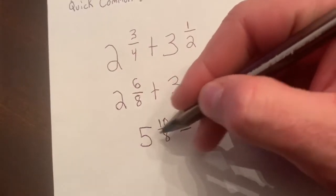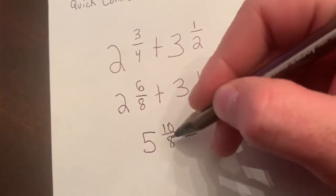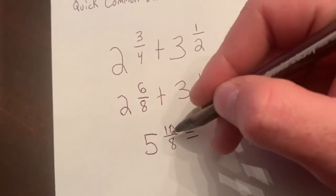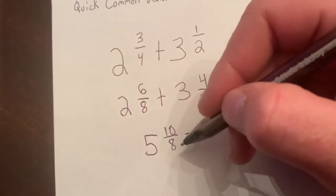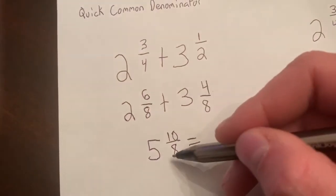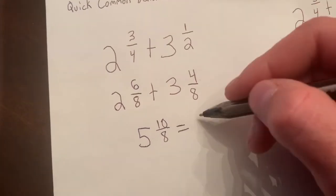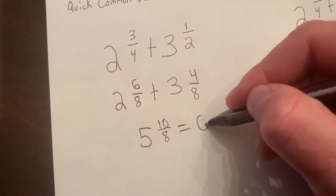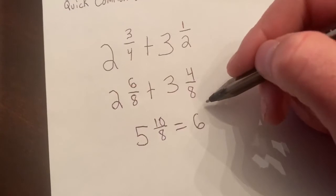Now this is not simplified. I've got to get this to be a regular fraction, not an improper fraction. So I can trade in one group of 8 and make this 6, and then 10 subtract 8 is 2, and my denominator is 8.